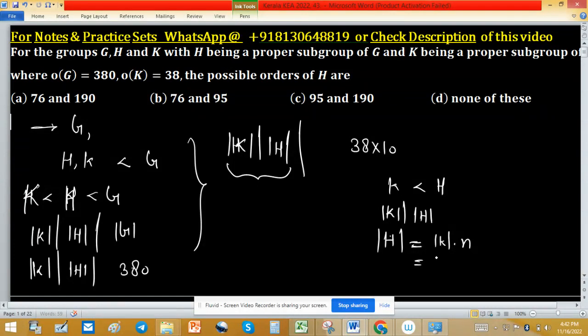Order of K is 38, that's why 38 into N. Now we have order of H, and order of H divides order of G by Lagrange's theorem. We have 38 into N will divide order of G, which is equal to 38 into 10.